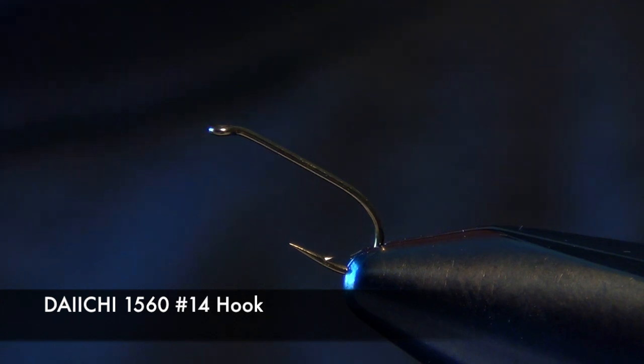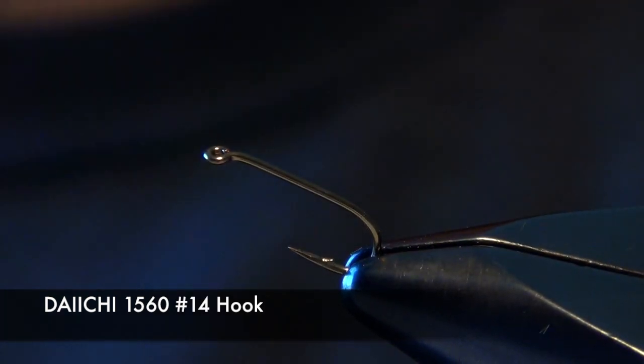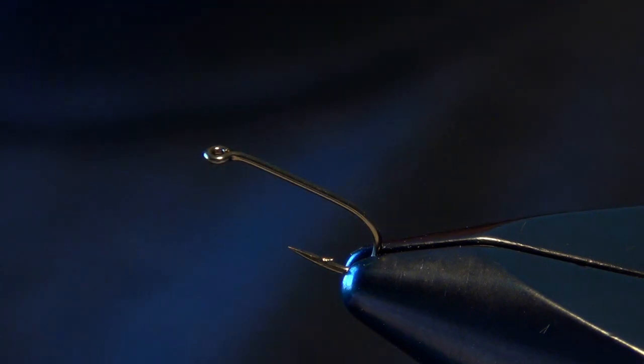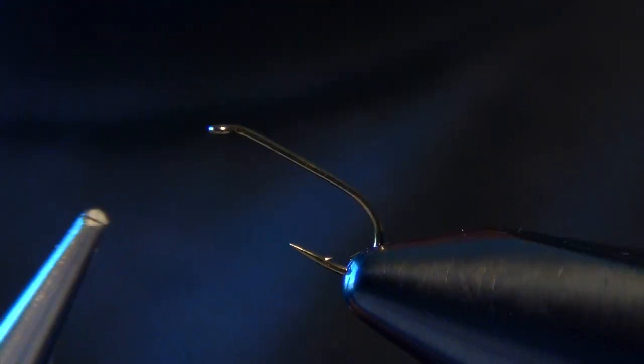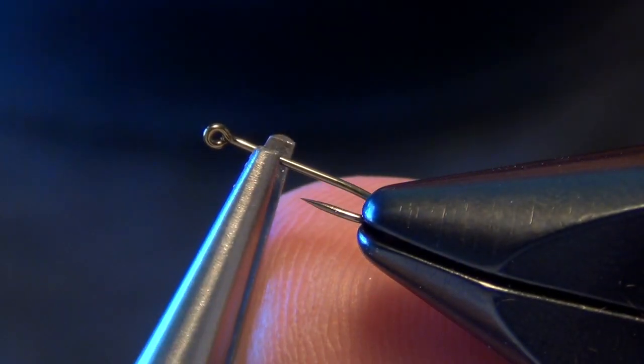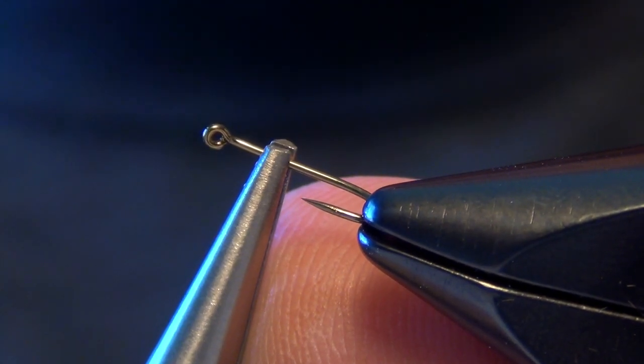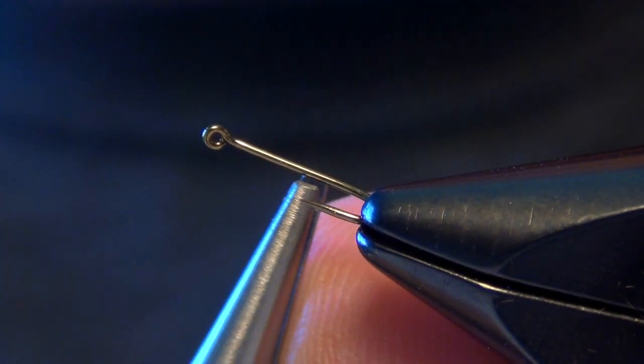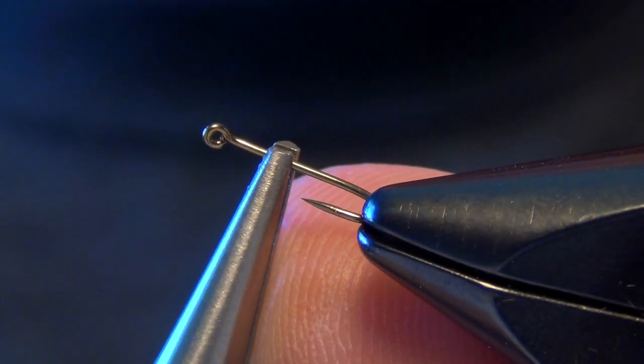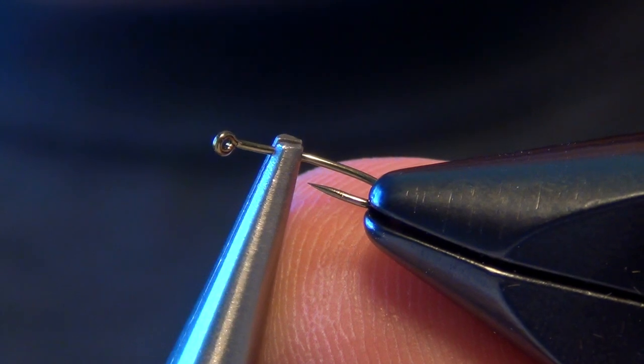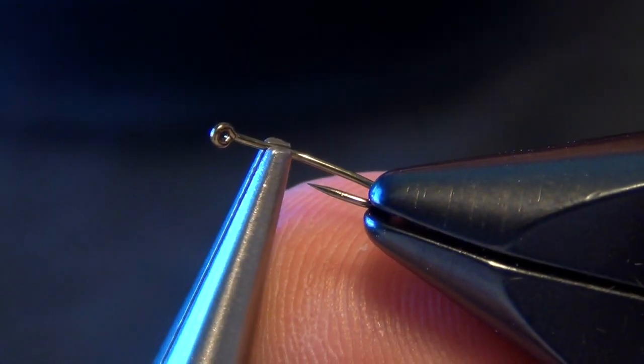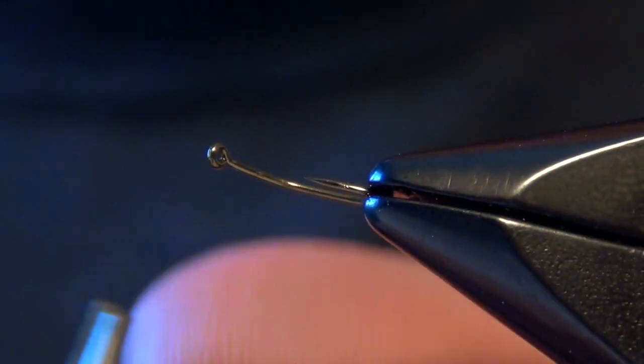We're going to start with the Daiichi 1560 nymph hook just like the other Tron Emergers we tie. I'm going to put it in a vise at an upward angle, then take a pair of pliers and grab it about the one-third portion, about two-thirds of the way up from the back of the hook. I'm just going to slightly kink that shank. This is going to make the fly look like a little crippled stonefly floating down the river.